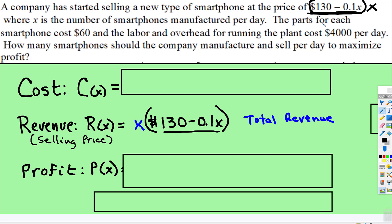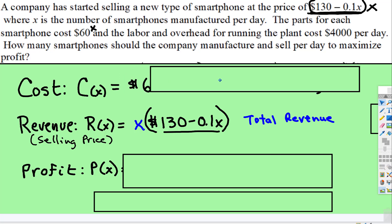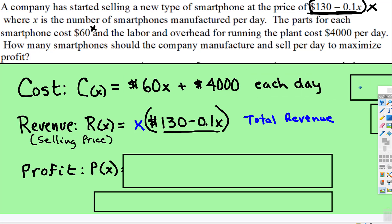The parts for each smartphone cost $60 per phone, so that would be times X. And then the labor and overhead for running the plant is $4,000 per day. So the cost of operating that plant daily is $60 per phone plus the $4,000 overhead each day.